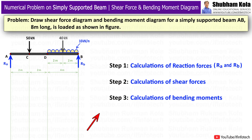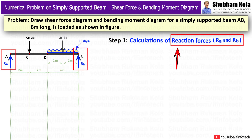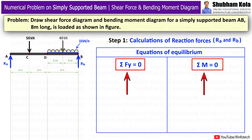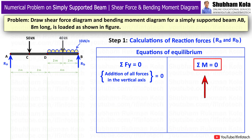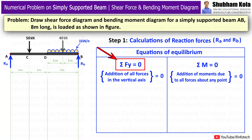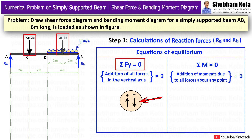We are going to solve this problem in three steps. In the first step, we calculate the values of support reaction forces Ra and Rb. To calculate these values, I will use two equations of equilibrium: first, summation of Fy equal to 0, meaning the sum of all forces in the vertical direction equals zero; and second, summation of moments equal to 0.